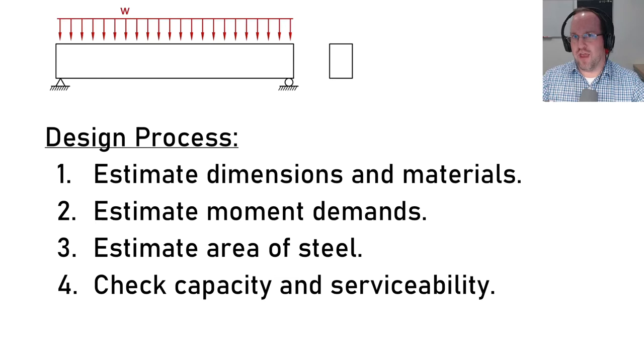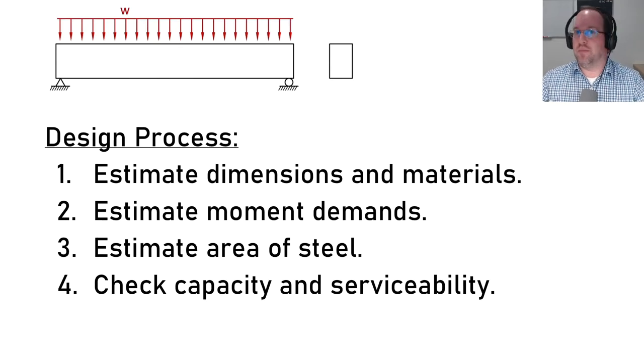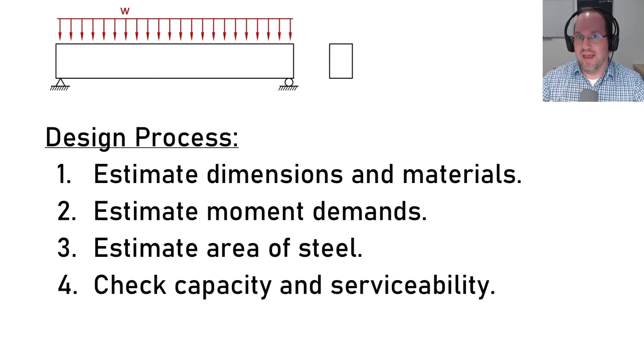We'll start off by talking about two different methods and then we'll employ those methods in an example calc on a simply supported beam. Let's first look at the general steps that will follow when designing a reinforced concrete beam. The first step is always to get your dimensions and material properties — things like span length are often going to be controlled by your column spacing and placement and generally your building layout.